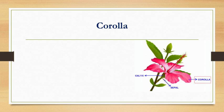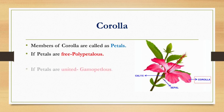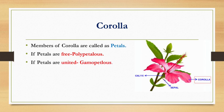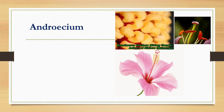The next accessory whorl is corolla. Members of corolla are called petals. If the petals are free from each other, the condition is polypetalous. If petals are united, it is called gamopetalous. The function of petals is to attract insects for pollination.